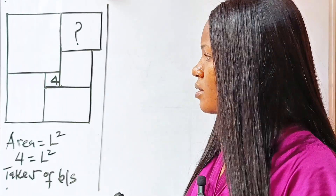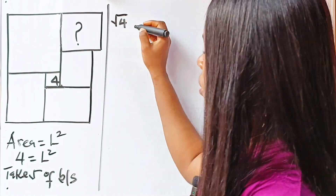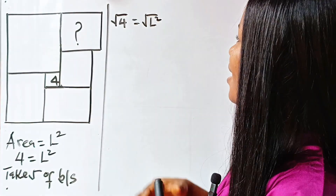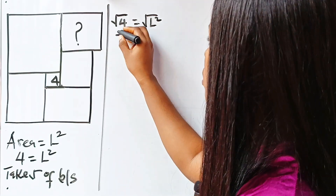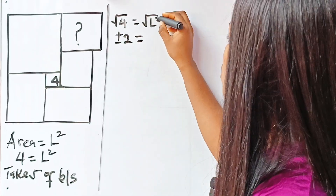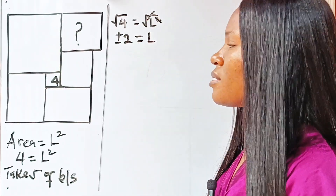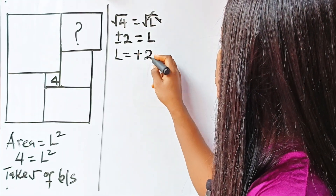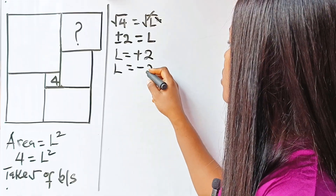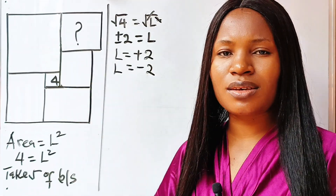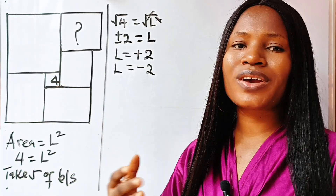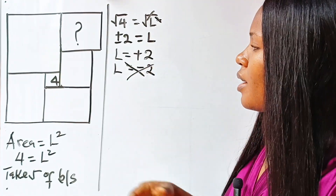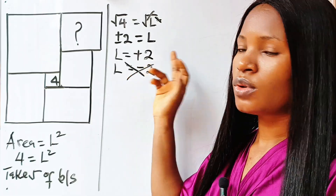Taking the square root of both sides gives us √4 = √(L²), so the square root of 4 is plus or minus 2, which equals L. The length has two values: L = +2 and L = −2. But length is something physical — it cannot be a negative number — so the negative value is rejected. The length of the smallest square is 2.